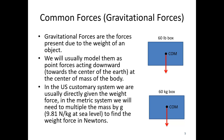In the metric system we usually work with mass. A 60-kilogram mass needs to be multiplied by small g, which is 9.81 newtons per kilogram on the surface of Earth. That gives us the weight force in newtons — 60 times 9.81 equals 588.6 newtons.